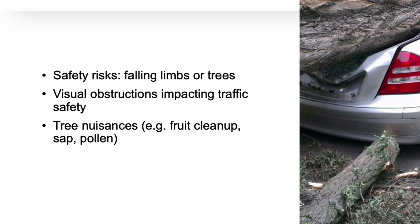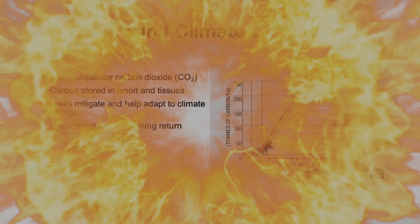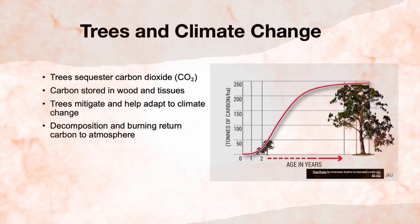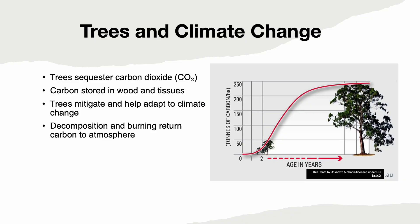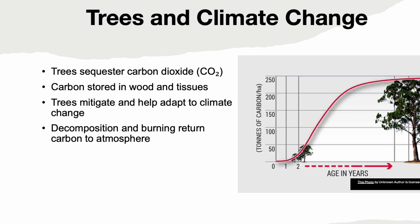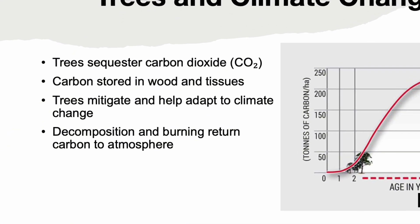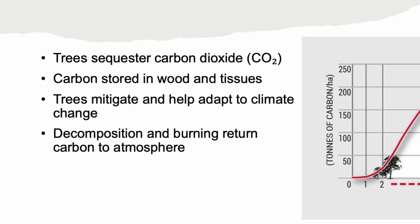These issues need to be managed carefully to maintain public support of the urban forest. Climate change is driven by rising levels of greenhouse gases like carbon dioxide. Trees help by absorbing CO2 through photosynthesis and storing it in their wood — a process called carbon sequestration — which mitigates climate change. However, when trees die or are removed, some of that carbon is released back. Urban forestry also supports climate adaptation by reducing heat and managing water.